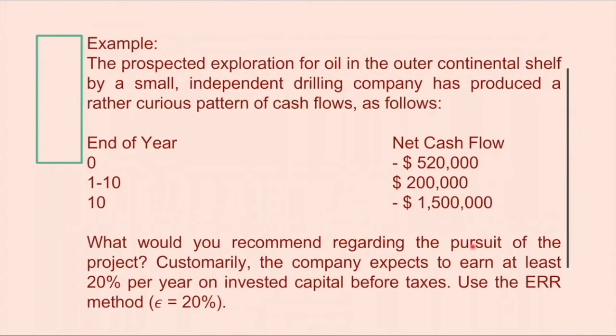Next example. The prospective exploration for oil in the outer continental shelf by a small independent drilling company has produced a cash flow. So at the end of year 0, it has negative $520,000. From 1 to 10, it has $200,000.